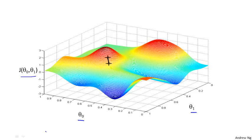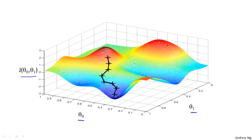And now you're at this new point on your hill — you're going to again look all around and then say, what direction should I step in order to take a little baby step downhill? And if you do that and take another step, you take a step in that direction. And then you keep going — from this new point, you look around, decide what direction will take you downhill most quickly, take another step, and so on, until you converge to this local minimum down here.